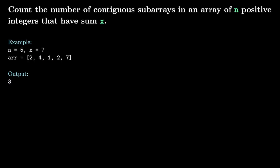Let's say we're given an array of n positive integers and we want to count the number of contiguous subarrays that have a sum of x. So here, for example, n is 5 and the sum we want to find is 7. Our array contains the elements 2, 4, 1, 2, and 7. The answer would be 3 — we have three contiguous subarrays: [2,4,1], [4,1,2], and [7].